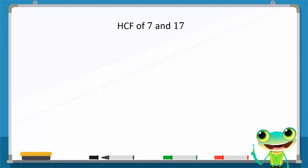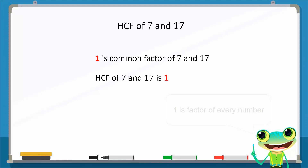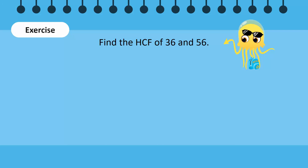Can you find the HCF of 7 and 17? Observe that 7 and 17 are prime numbers. Prime numbers have only two factors: one and themselves. So there is no common factor of 7 and 17 except one. If there are no common factors of the given numbers, then the highest common factor will always be one, because one is a factor of every number. Let's do a quick exercise — take a minute to find the HCF of these numbers.